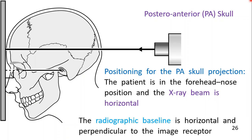Now let's see the position for the PA skull projection. The patient is in the forehead-nose position and the x-ray beam is horizontal. The radiographic baseline is also horizontal and perpendicular to the image receptor.